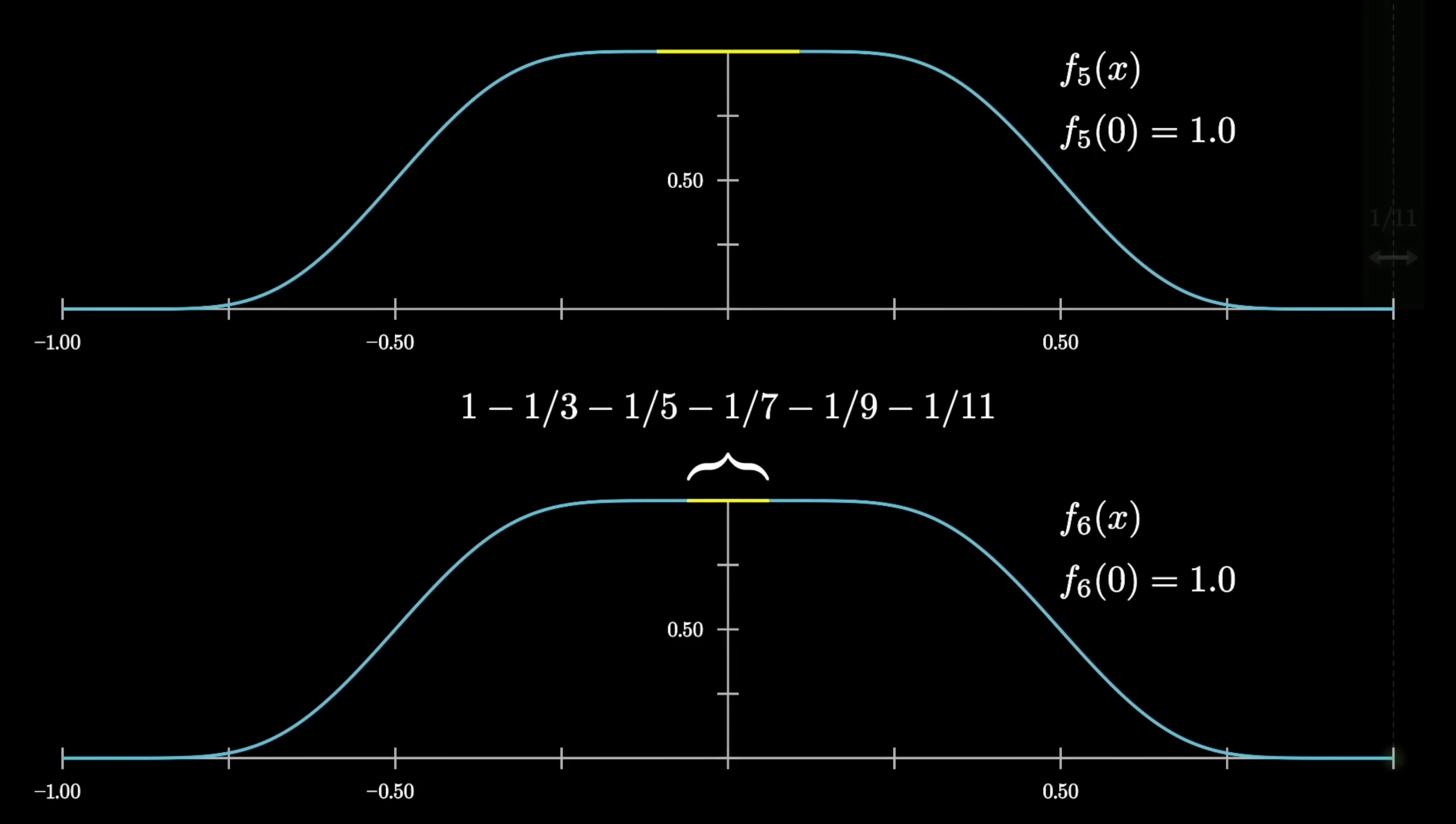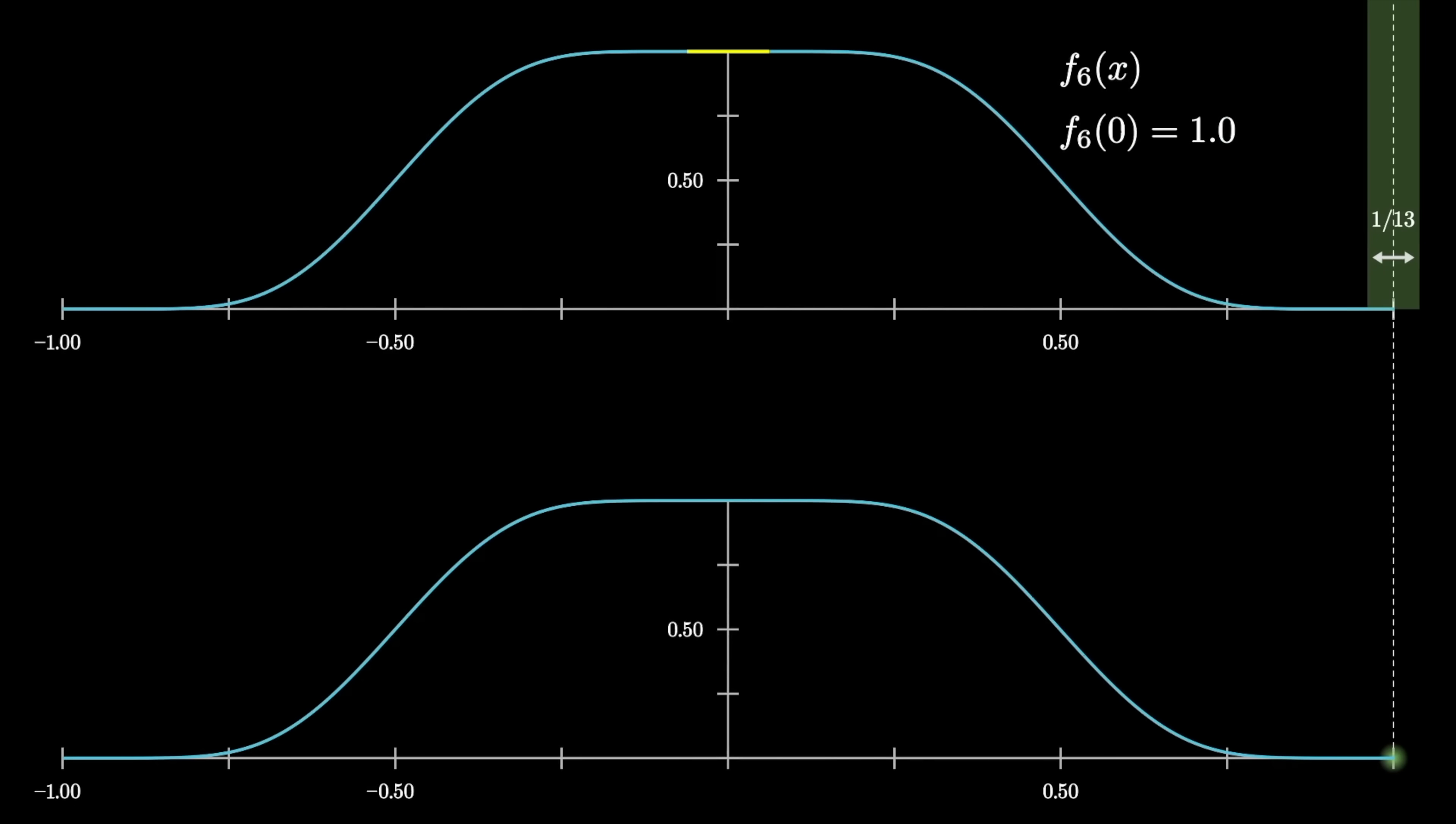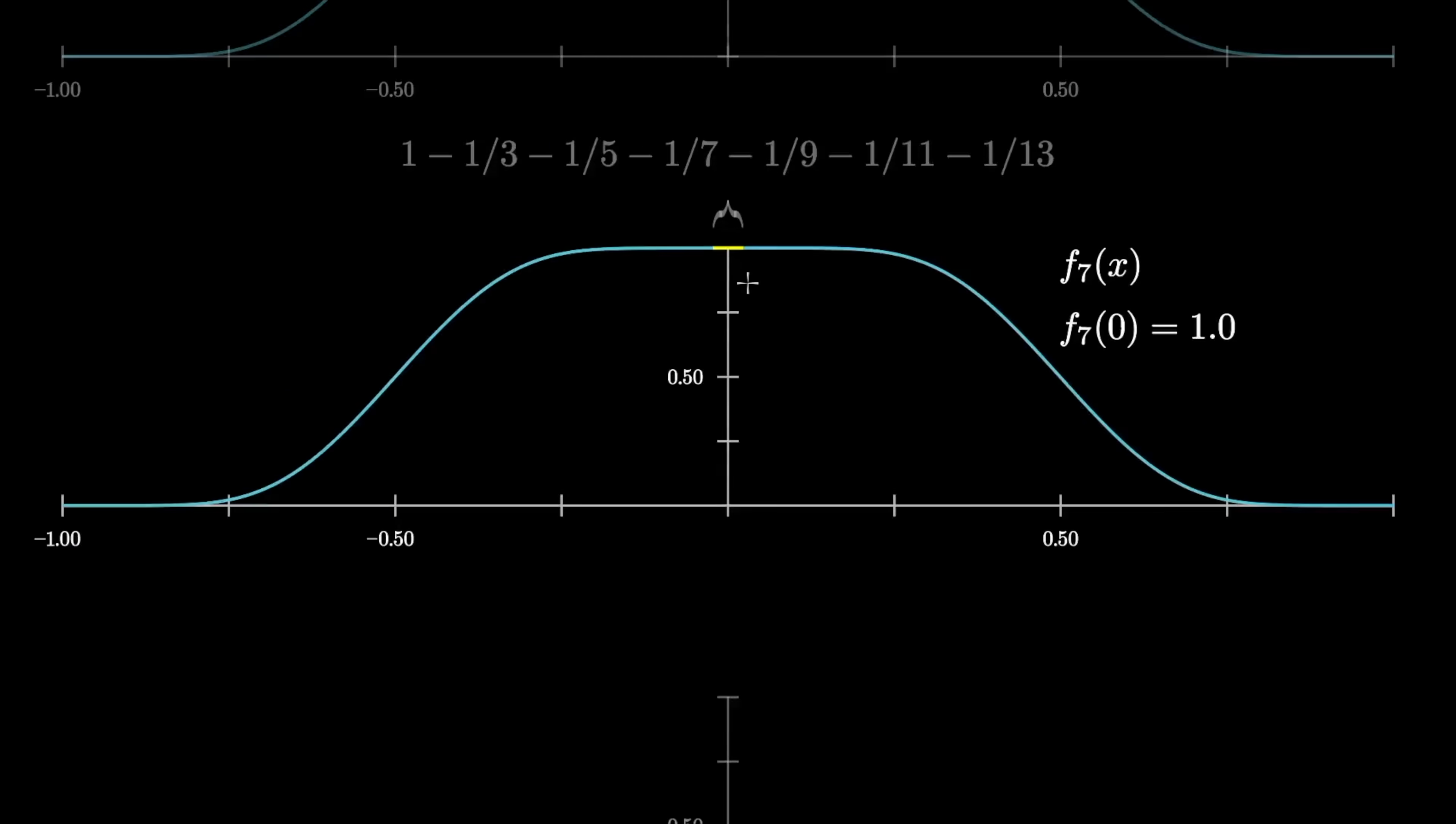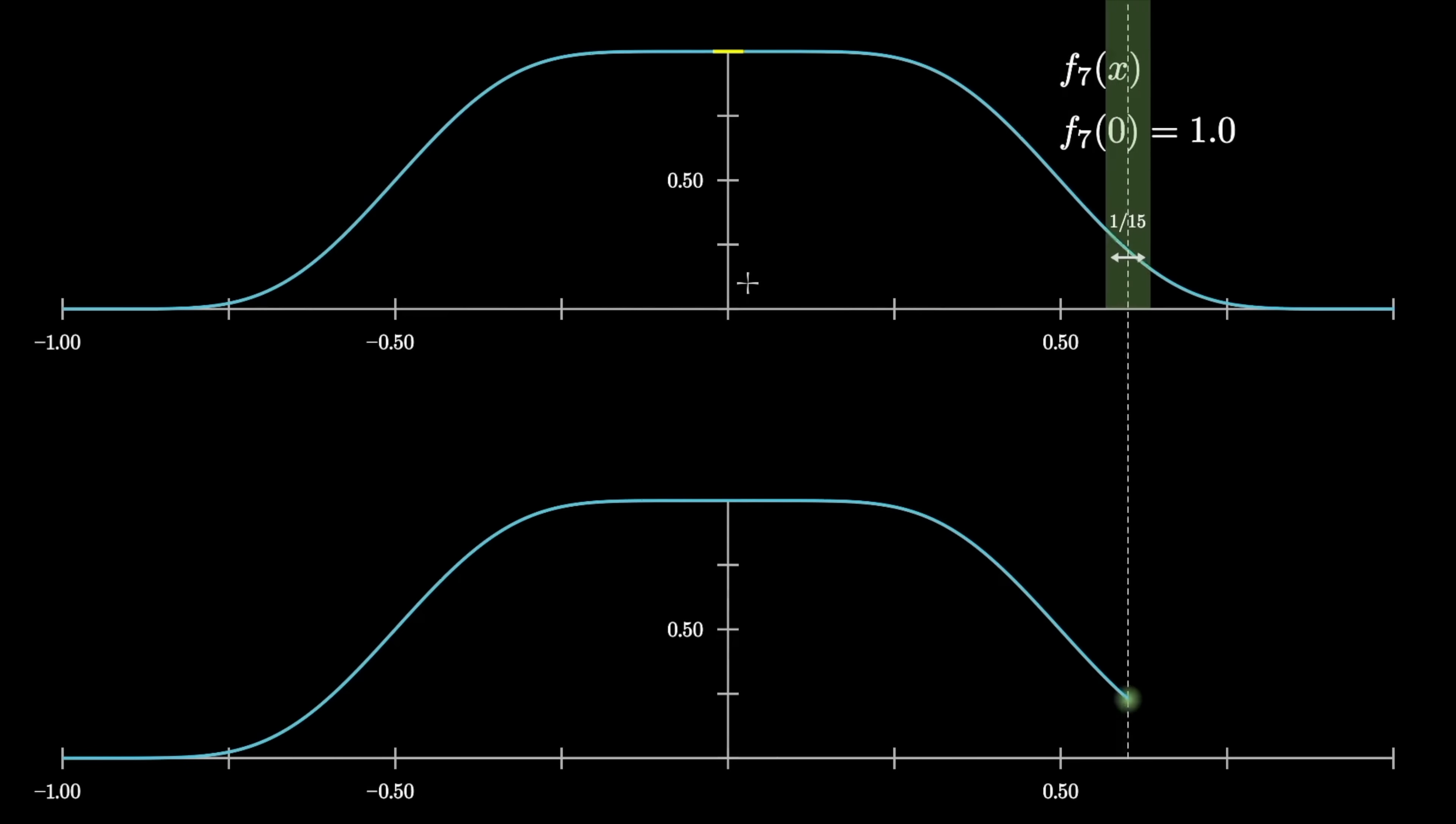And also notice how just outside of the plateau, the function is really, really close to 1 because it's always been the result of an average between the plateau at 1 and the neighbors, which themselves are really, really close to 1. The point at which all of this breaks is once we get to the iteration where we're sliding a window with width 1 15th across the whole thing.